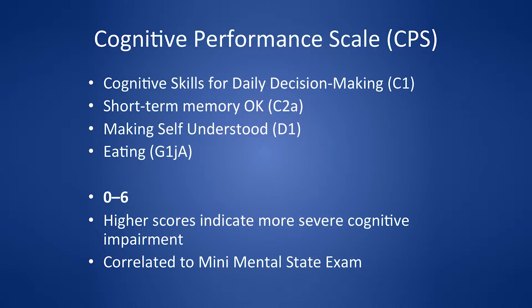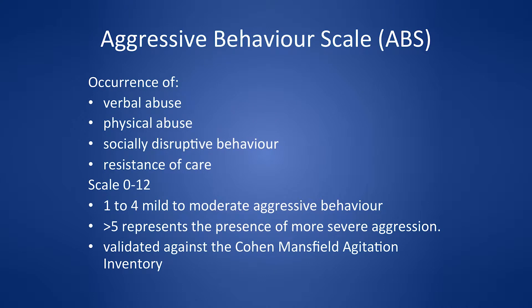The cognitive performance scale was correlated to the Mini-Mental State Exam — a higher score means more cognitive impairment. This is particularly helpful for someone you're worried about with delirium. Aggressive behavior covers verbal abuse, physical abuse, and socially disruptive behavior; one to four is mild, greater than five is helpful for deciding if you need mental health services involvement. Personally, I'd like to see these subscales used more and be more readily available — we're already gathering that data, so how do we make it more usable?